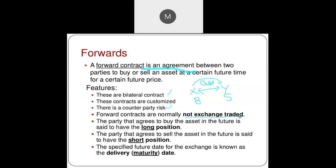The party that agrees to buy the asset in the future is in the long position. Whoever decides to purchase the contract holds a long position. The person who decides to sell the product or contract is in the short position. So basically there are two parties: the person with the long position and the person with the short position.